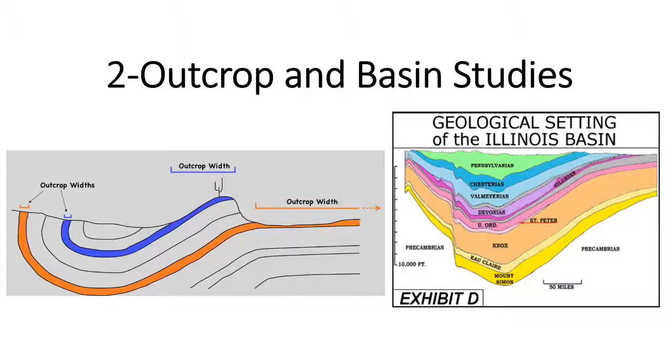Outcrop has the same material as the reservoir. It is the extension of the reservoir. You can see in the picture on the left side, consider the blue and orange colors are the reservoir rock. You can see that these reservoirs are extended to the surface. So simply, instead of getting data from the reservoir which is around two or three kilometers underground, data can simply be obtained from outcrop. Isn't that easy?